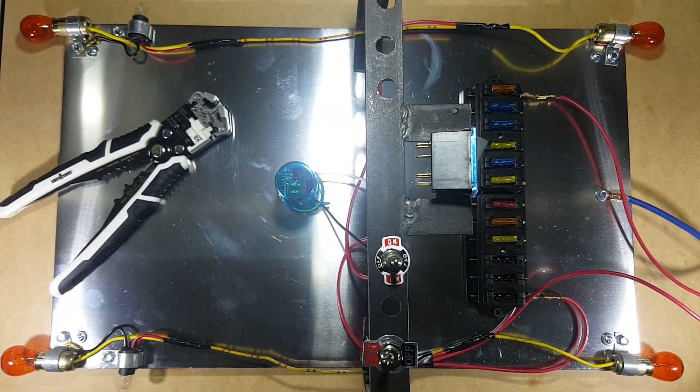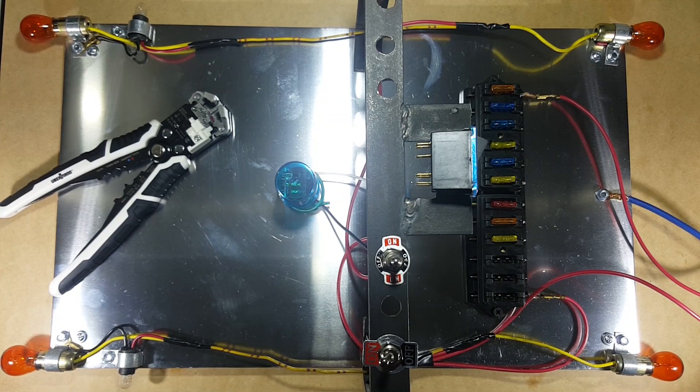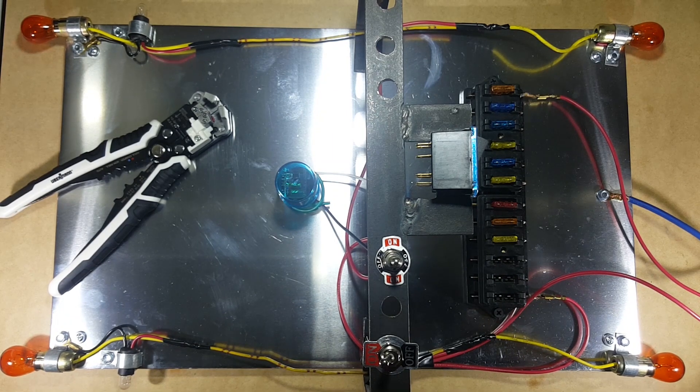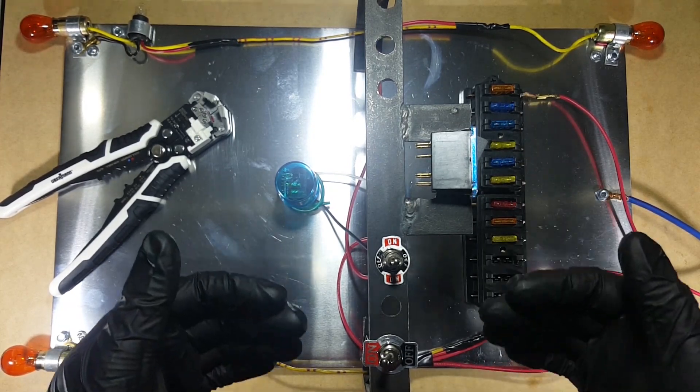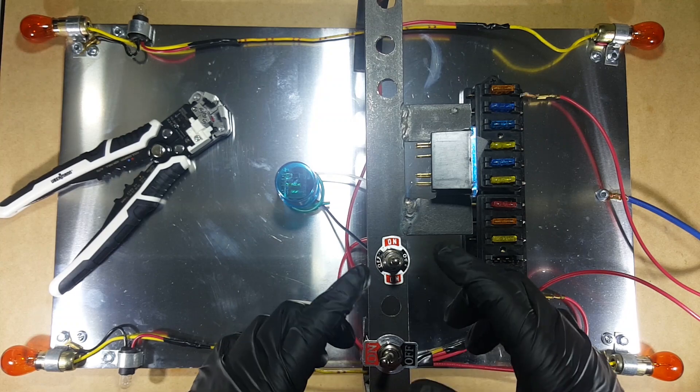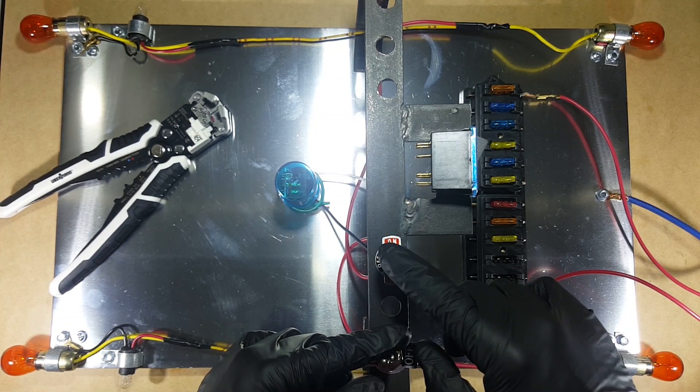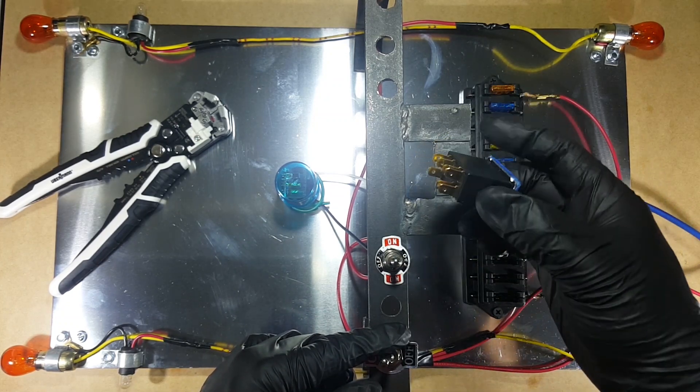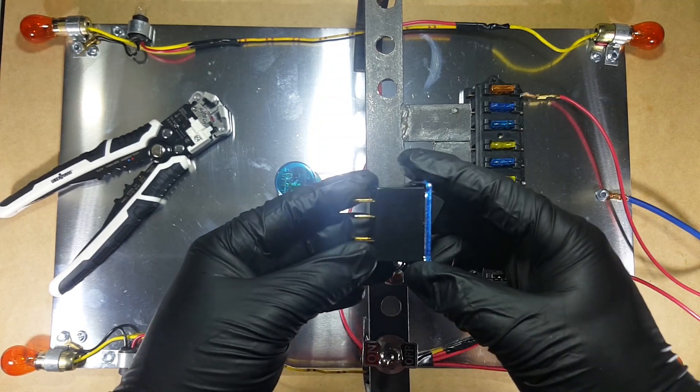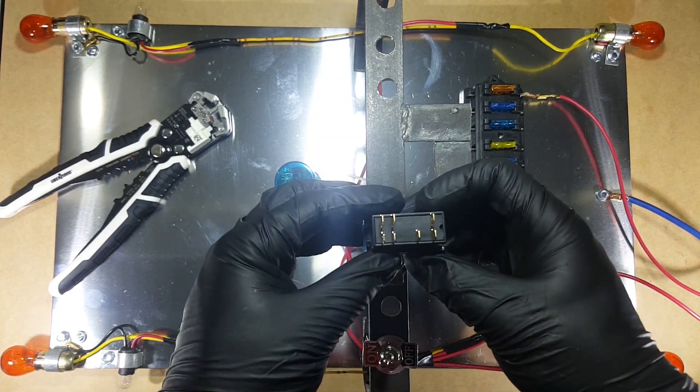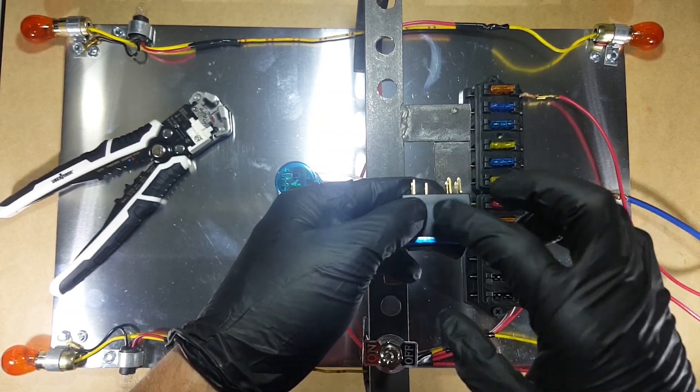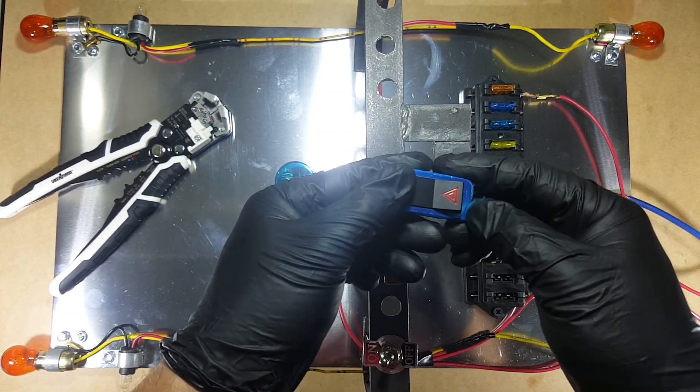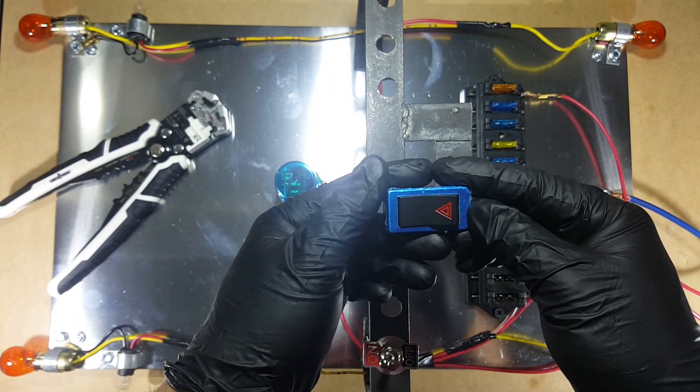This circuit that I have been working on is the circuit of stationary or parking, or also called emergency lights. We are going to transform the previous circuit that we have done where it only worked as directional. Now we are going to transform it to directional and stationary thanks to this little button. This button has seven terminals and is special for parking. Here is the symbol of parking, emergency, or emergency lights.